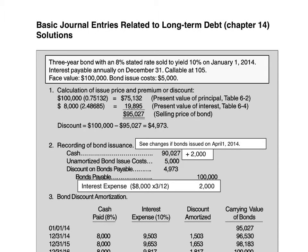I would like to go over the basic journal entries related to long-term debt. In the first one, we have a three-year bond with 8% stated rate that was sold to yield 10% on January 1, 2014.